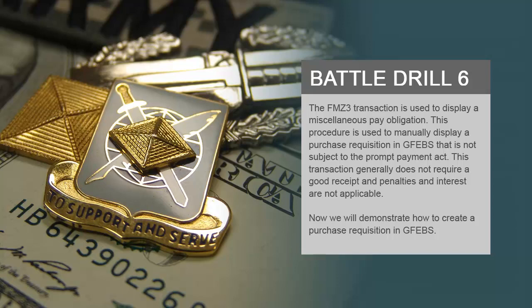The FMZ3 transaction is used to display a miscellaneous pay obligation. This procedure is used to manually display a purchase requisition in GFIBS that is not subject to the Prompt Payment Act. This transaction generally does not require a goods receipt, and penalties and interest are not applicable. Now we will demonstrate how to create a purchase requisition in GFIBS.